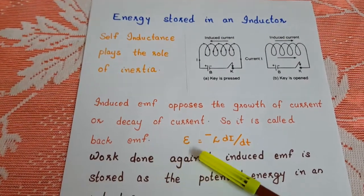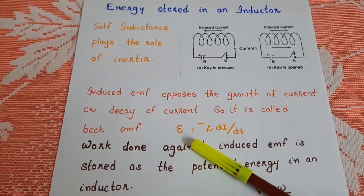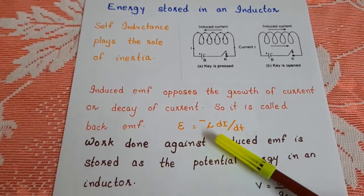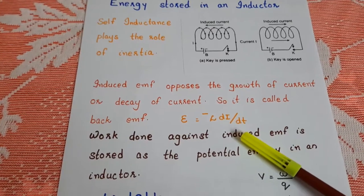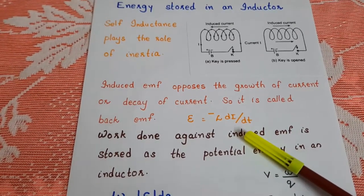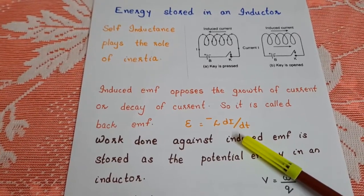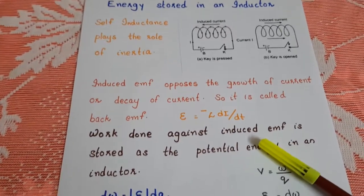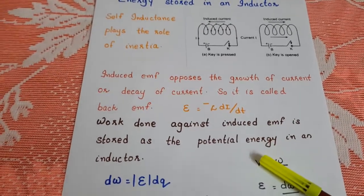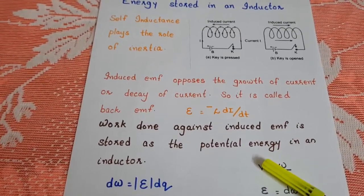The induced EMF in an inductor is equal to minus L into dI by dt. So the cell has to do work against the back EMF. The work done against the induced EMF is stored as the potential energy in an inductor.